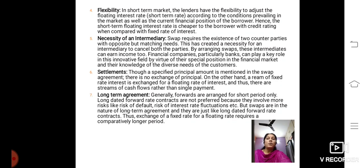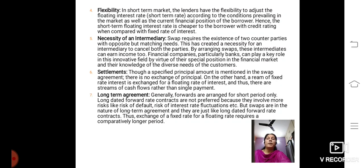Hence, the short term floating interest rate is cheaper to the borrower with the credit rating when compared with a fixed rate of interest. The next feature is the necessity of an intermediary. SWAP requires the existence of two counterparties with opposite but matching needs. This has created a necessity for an intermediary to connect both the parties. By arranging SWAPs, these intermediaries can earn income too. Financial companies, particularly banks, can play a key role in this innovative field by virtue of their special position in the financial market and their knowledge of the diverse needs of the customers.